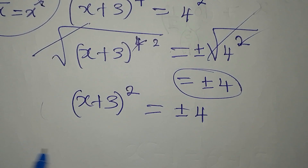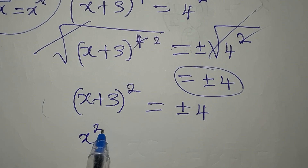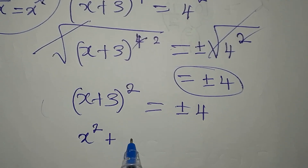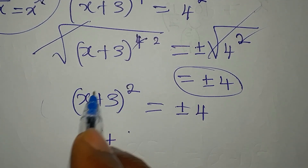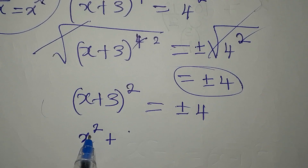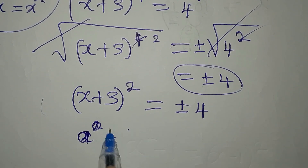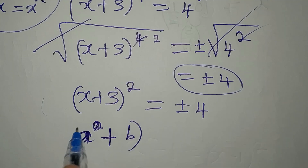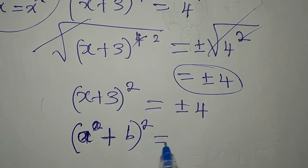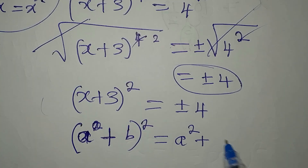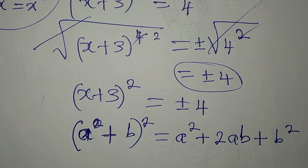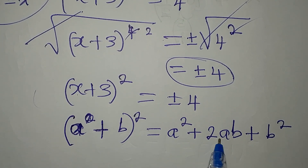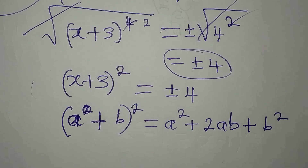Now I'm going to expand (x + 3) squared. The standard expansion formula is: if you have (a + b) squared, that equals a squared plus 2ab plus b squared. In this case our a is x and our b is 3.